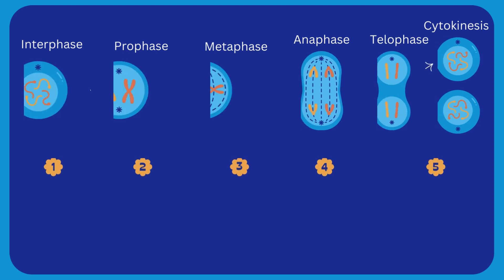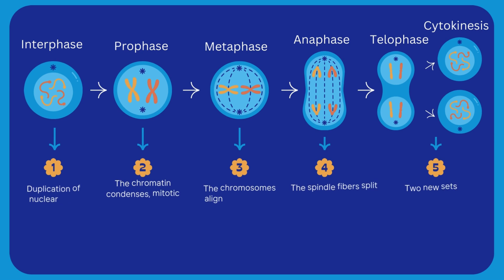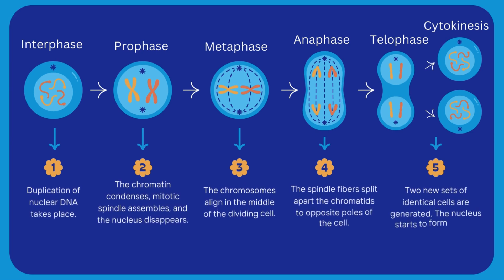So this is what happens in mitosis. First, in interphase, duplication of nuclear DNA takes place. In prophase, chromatin condenses, the mitotic spindle assembles, and the nucleus disappears. In metaphase, chromosomes align in the middle of the dividing cell. In anaphase, spindle fibers split apart the chromatids to opposite poles. In telophase, chromatids reach the poles and decondense into chromatin, and a new nuclear envelope forms around each set of chromosomes. Lastly, in cytokinesis, two new sets of identical cells are generated.